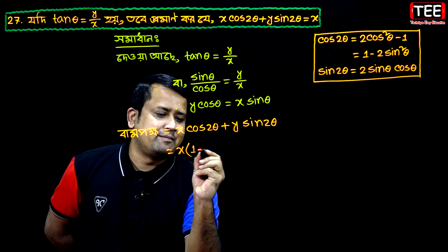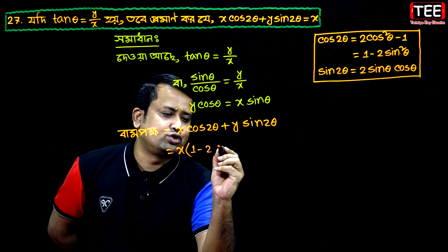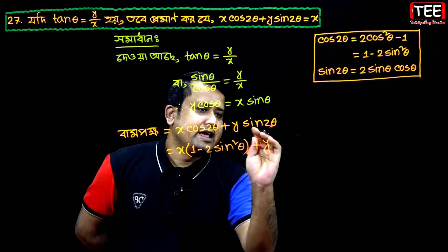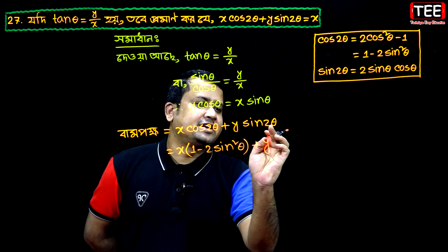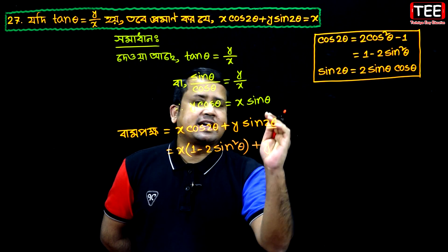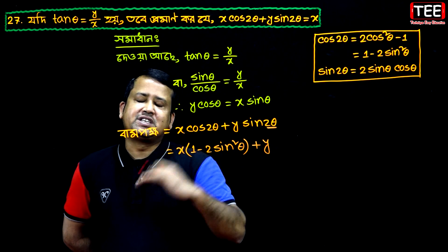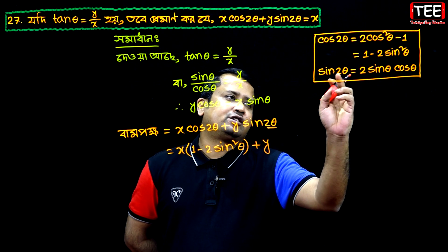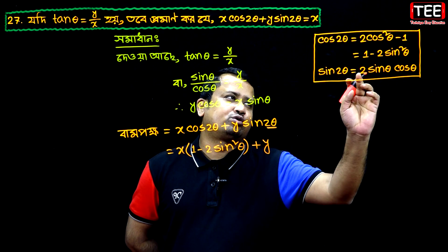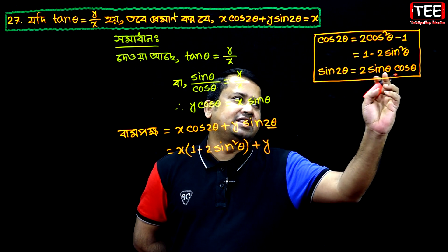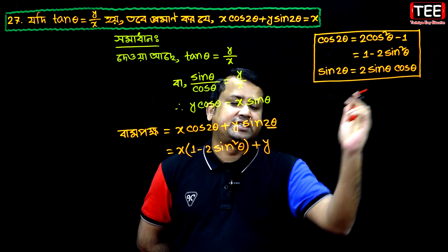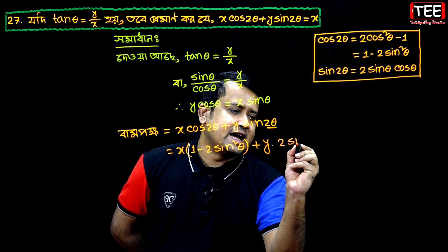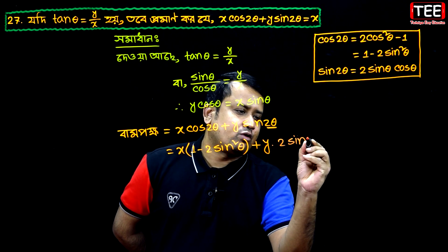Then, 1 minus 2sin²θ plus y. Then sin 2θ is 0 — I will apply 2θ to θ. Then sin 2θ is 2sinθ cosθ. Then, sinθ cosθ.